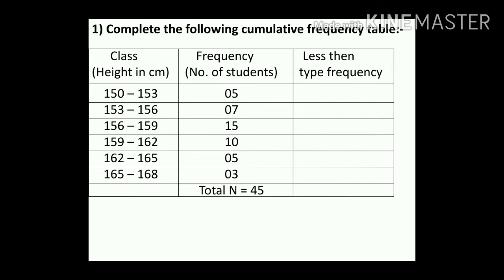For less-than type, we add the frequencies. The height classes are given from 150–153 up to 165–168. The frequencies (number of students) are: 5, 7, 15, 10, 5, 3. The total frequency is 45, meaning there are 45 students.